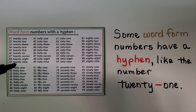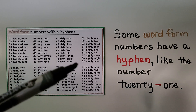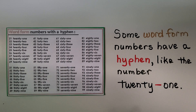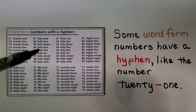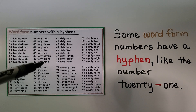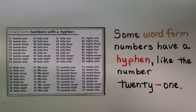The multiples of ten — 30, 40, 50, 60, 70, 80, 90 — don't have hyphens, but when we add a 1 through 9 to the end of the word, we put a hyphen. So some word form numbers have a hyphen and some don't.